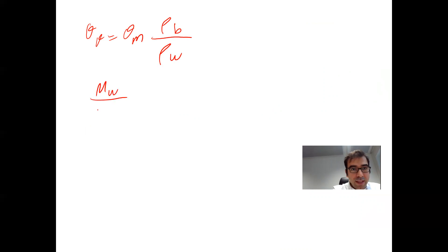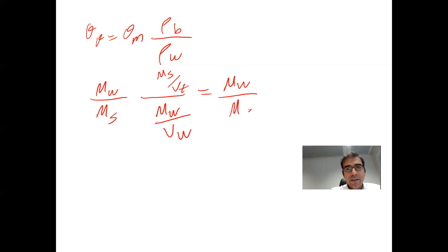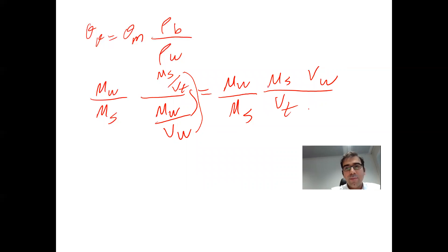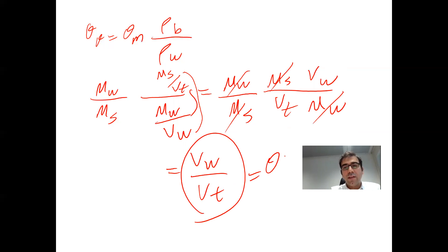How can you derive this equation? Instead of theta_m, we know theta_m equals mass of water divided by mass of solid — that's the definition of gravimetric water content — times rho_B, which equals mass of solid divided by total volume, divided by rho_W, which is mass of water divided by volume of water. That simplifies to Vw divided by Vt, which by definition equals theta_v. So theta_m times rho_B divided by rho_W equals theta_v.